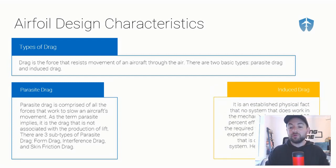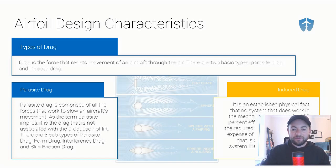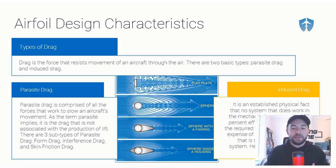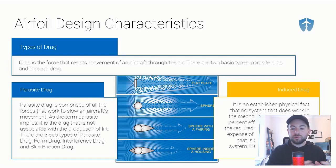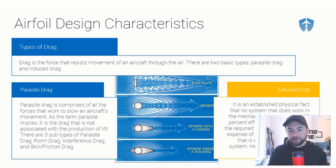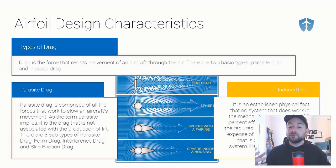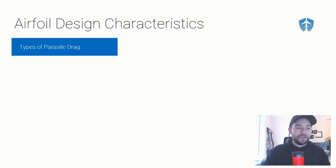The other major type of drag is induced drag. It is an established physical fact that no system that does work can be 100% efficient. So think of induced drag as a byproduct of lift. Anytime the aircraft is producing lift, you're going to get drag along with that, because lift cannot be produced 100% efficiently. Induced drag is a byproduct of lift, and parasite drag is just a parasite — but they're both working to slow the aircraft down.